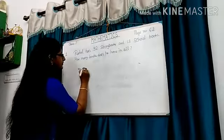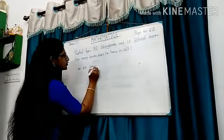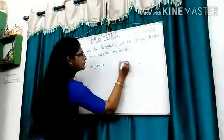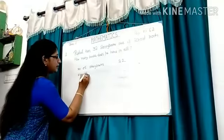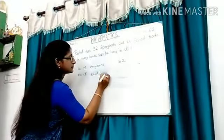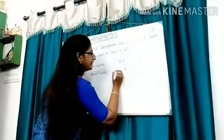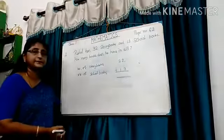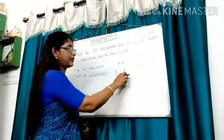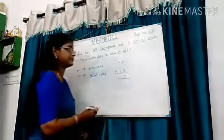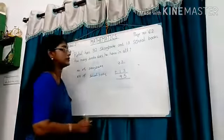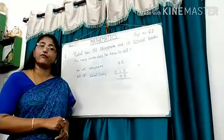Number of story books: 32. Number of school books: 13. Let's add — 2 plus 3 is 5, and 3 plus 1 is equal to 4. So the answer is 45.